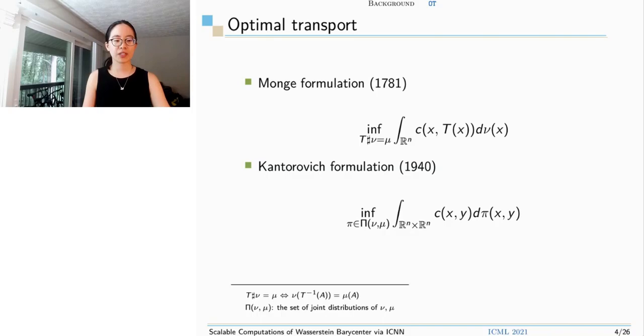Monge formulation can be ill-posed because sometimes there is no map specifying the T push forward nu is mu. For example, when nu is Dirac measure, but mu is not.